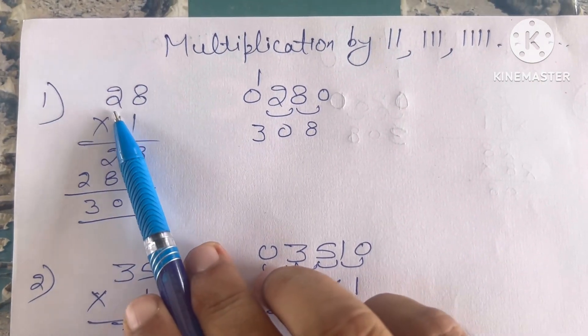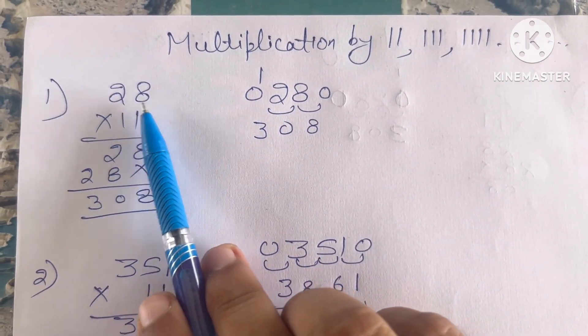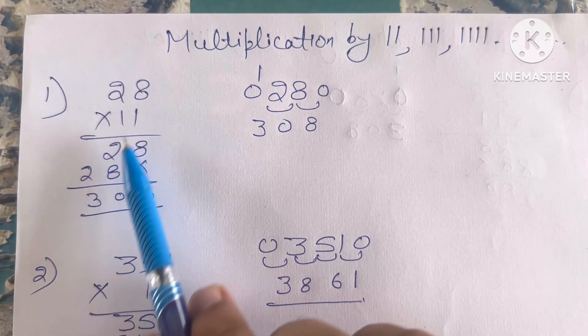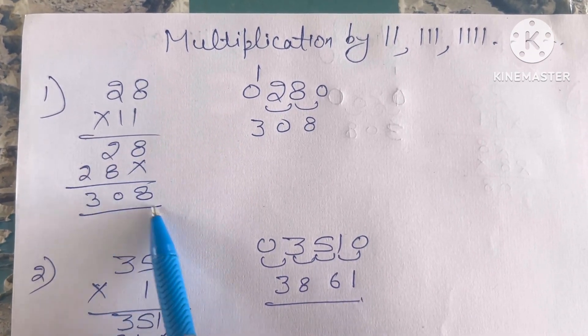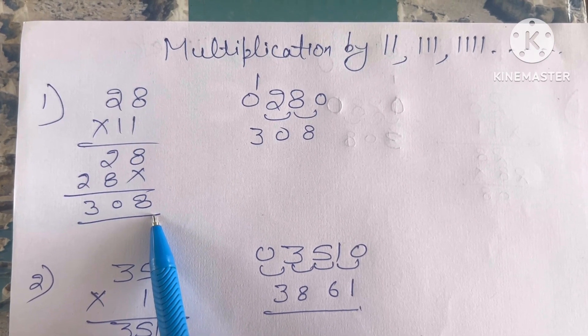For example, we have to multiply 28 by 11. So if we multiply, you all know, it comes out to be 308. And there is a short trick.